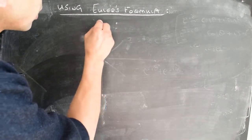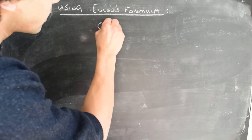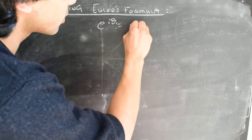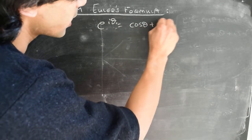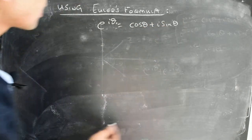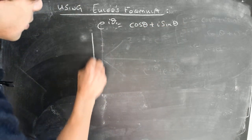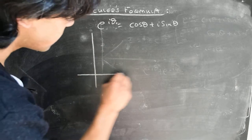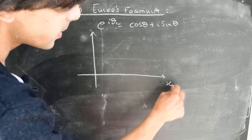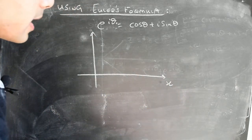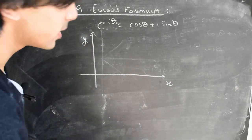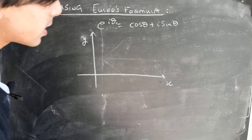Euler's identity states that e to the power i theta equals cosine theta plus i sine theta. So let's say we are on the complex plane where this is the real axis — let's label points along this as x — and this is the imaginary axis, and let's label points along this as y.